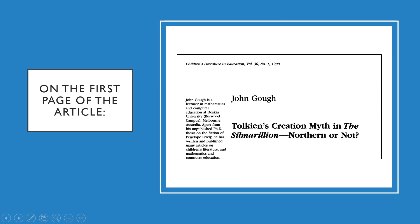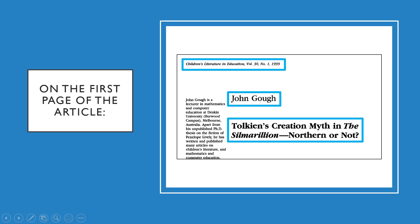Finally, if the PDF doesn't have a cover page, look on the first page of the article. Usually, you will find the author name, article title, and journal information on the first page. The only problem is you usually don't find the page range this way. You end up getting the page range by finding the number of the first page of the article and then the number of the article's last page.